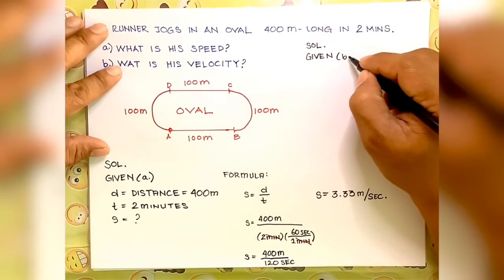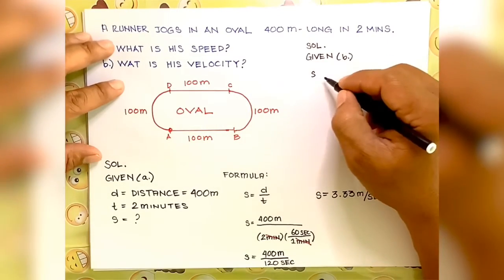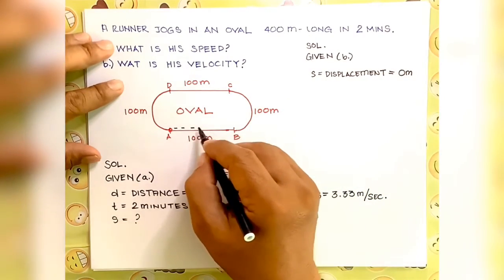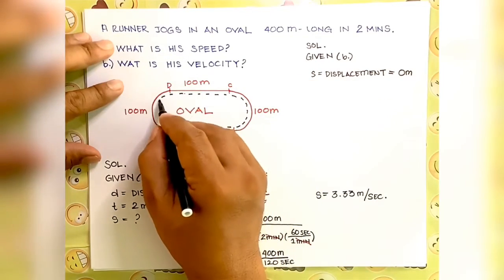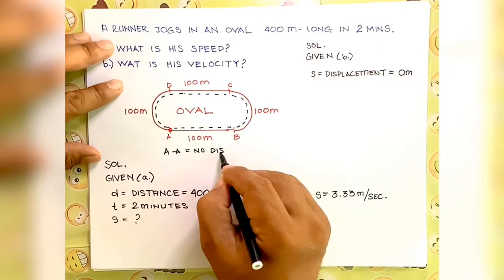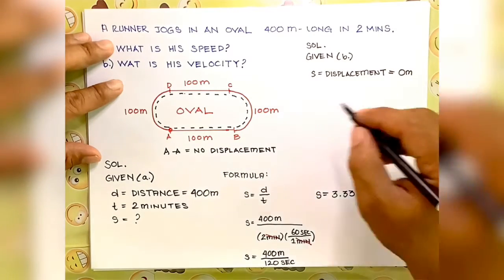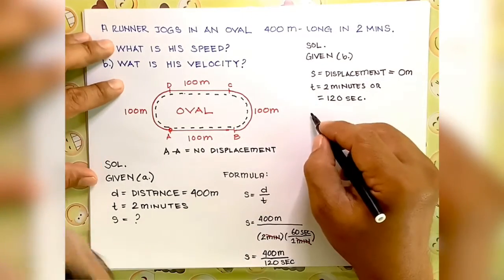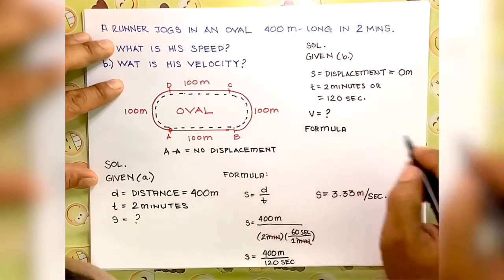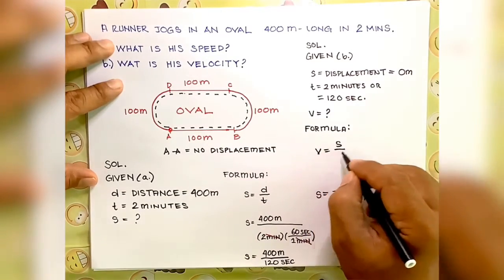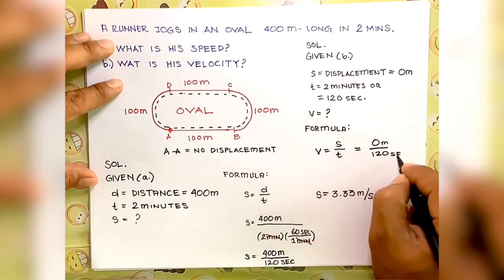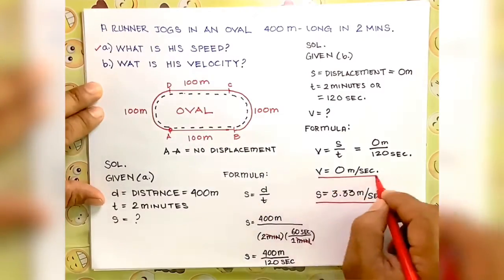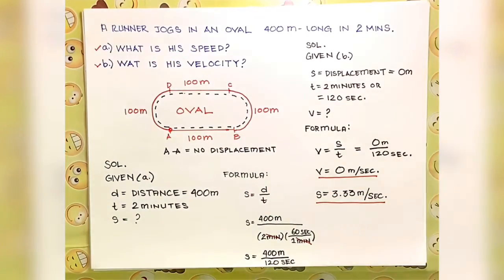In solving for letter B, the velocity: the given will be the displacement. Is there a displacement when the runner jogs 400 meters? That is just from the original position back to its original position. Therefore, there is no displacement — so displacement is 0 meters. The time is still 120 seconds. The formula is velocity equals displacement over time, and since there is no displacement, the velocity is 0 meters per second.